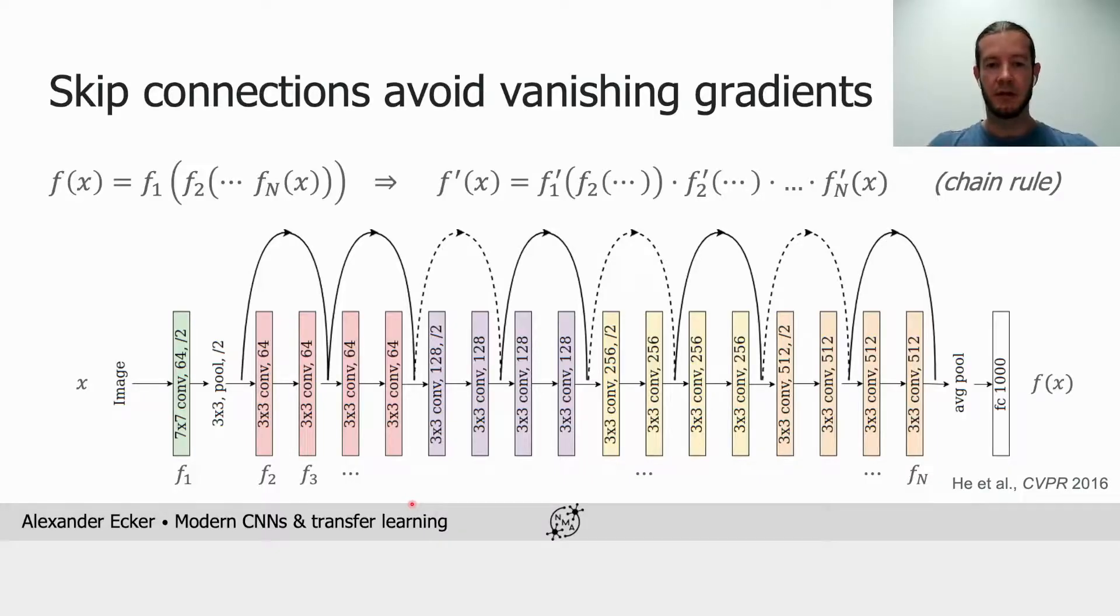By adding the skip connections, this problem disappears, because every layer is more or less directly hooked up to the output and will therefore receive a gradient signal that doesn't first have to backpropagate through all the subsequent layers. And this simple trick enables training much deeper networks of up to hundreds of layers.